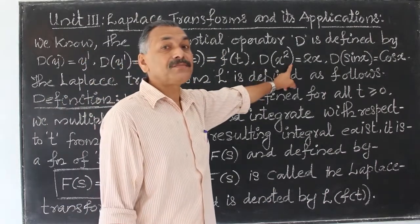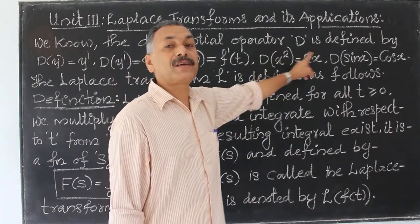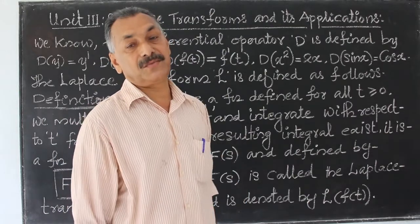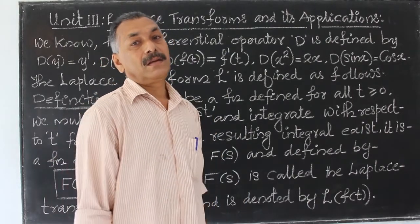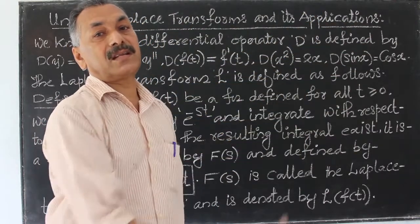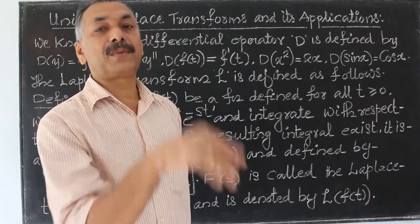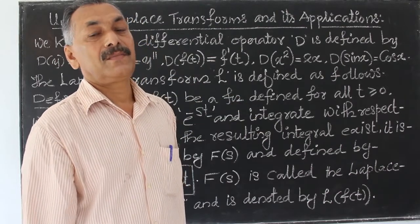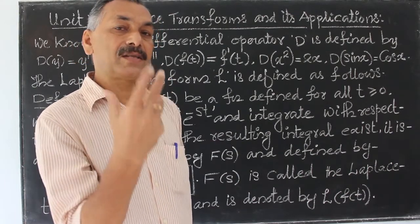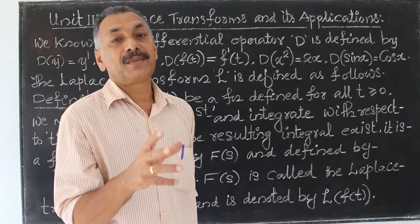What is D of x squared? The derivative of x squared is equal to 2x. Similarly, next we consider an operator connected with integration. A function can also be an integral. This concept applies to a material function — like a transform — and that is the Laplace transform.